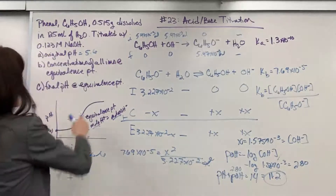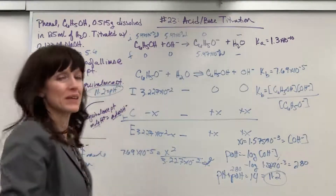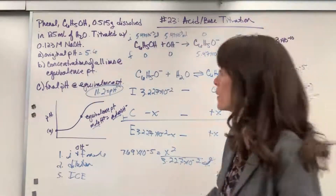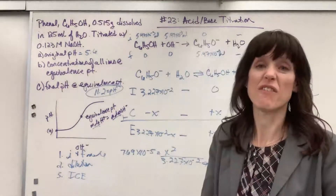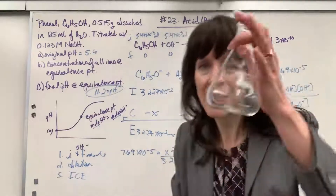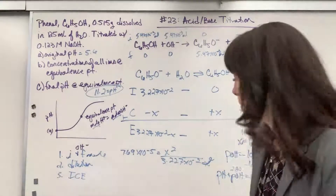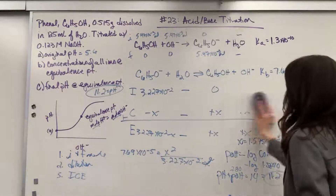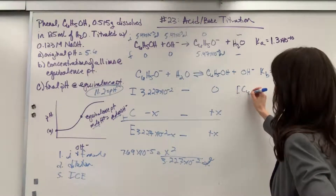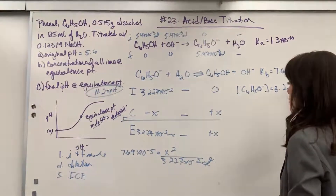That's pOH but we want pH. Recall pH plus pOH equals 14. Plugging in 2.8 gives us pH equals 11.2. Our final pH at the equivalence point is 11.2. Now coming back to find the concentrations of everything at the equivalence point: concentration of C6H5O minus is 3.227 times 10 to the minus 2. Since X is so small when subtracted, it's effectively still 3.227 times 10 to the minus 2 molar.